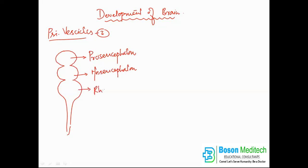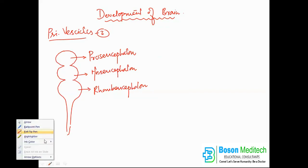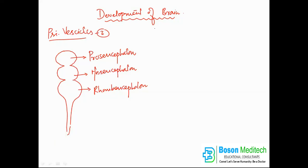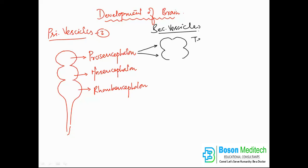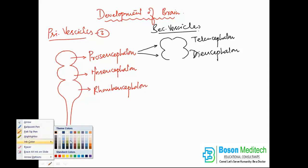These primary vesicles of the brain now develop into secondary vesicles. The prosencephalon develops into two secondary vesicles: one will be the telencephalon and the other one will be the diencephalon.